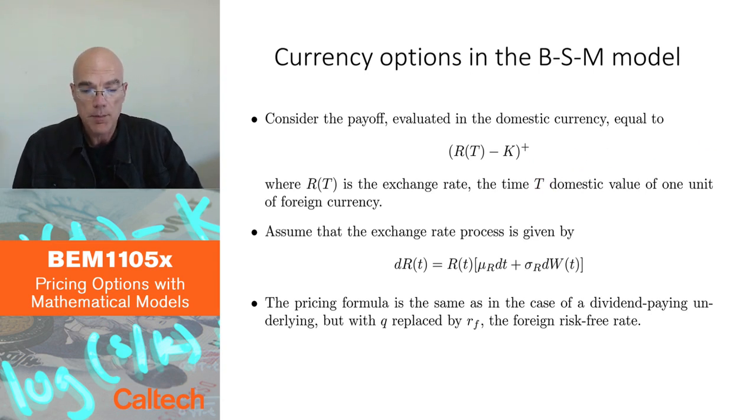And we want to find the price of this in domestic currency. We are going to assume that the exchange rate process follows the Black-Scholes-Merton model, geometric Brownian motion.